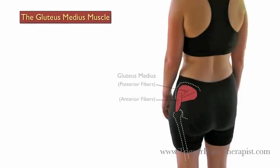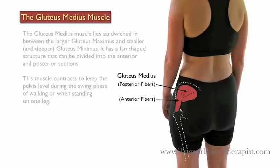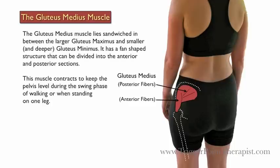The gluteus medius muscle lies sandwiched in between the larger gluteus maximus and the smaller and deeper gluteus minimus. It has a fan-shaped structure that can be divided into the anterior and posterior sections. This muscle contracts to keep the pelvis level during the swing phase of walking or when standing on one leg.